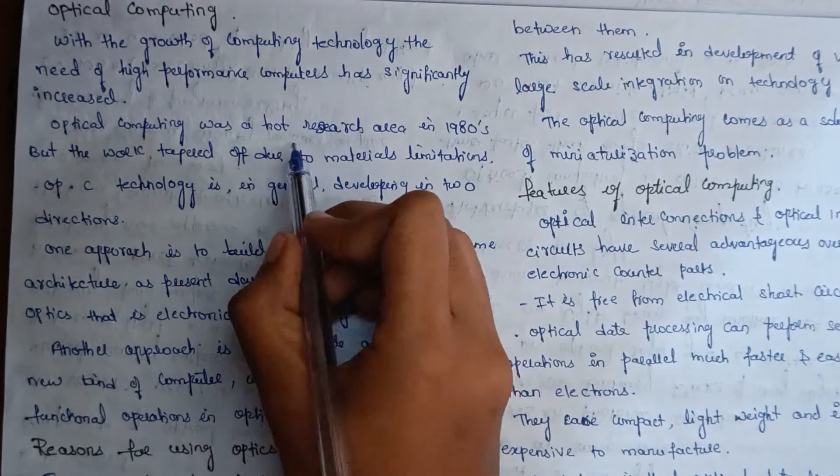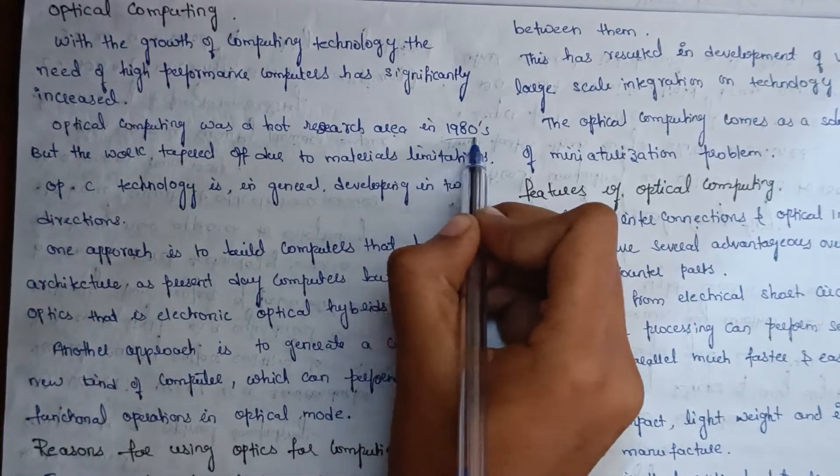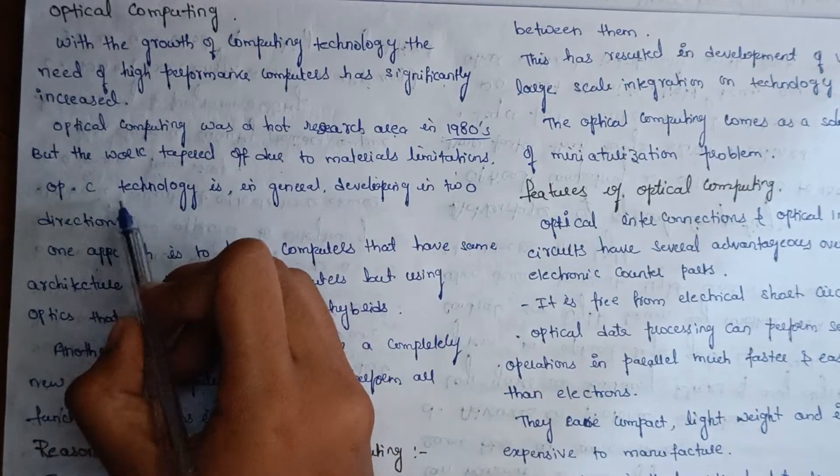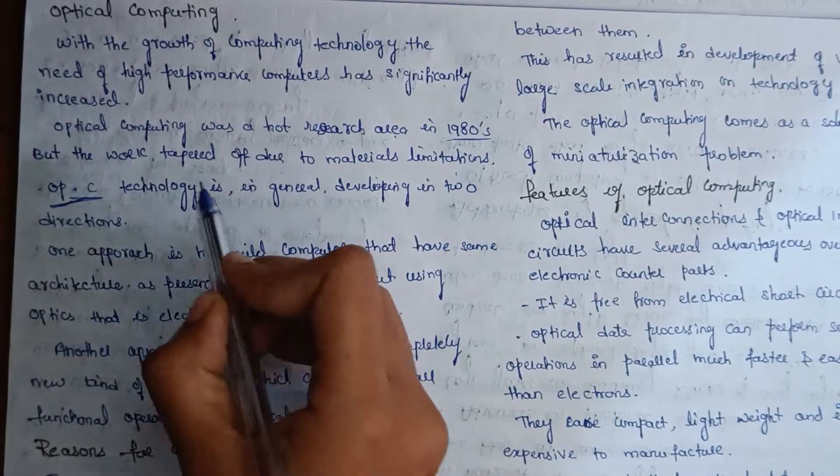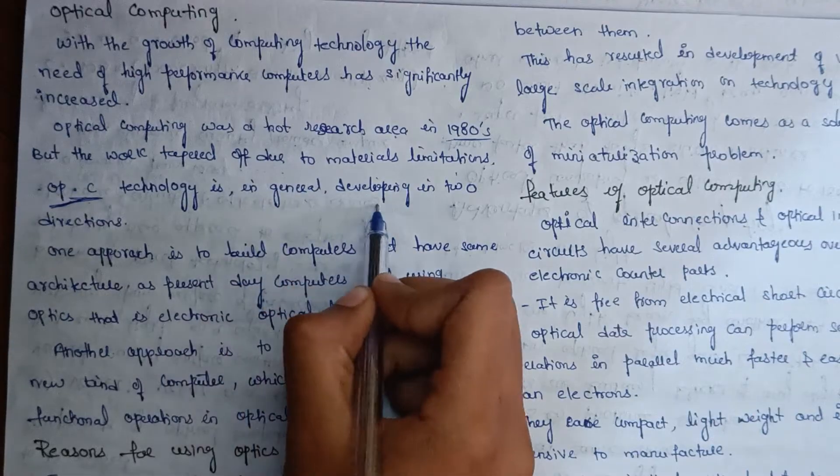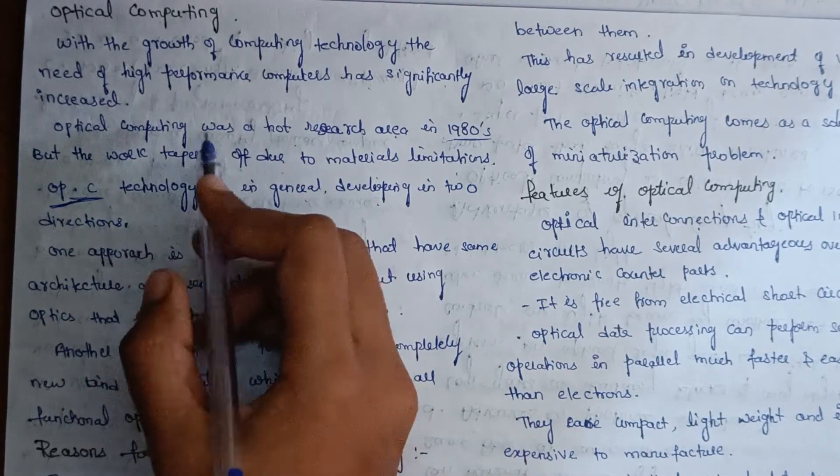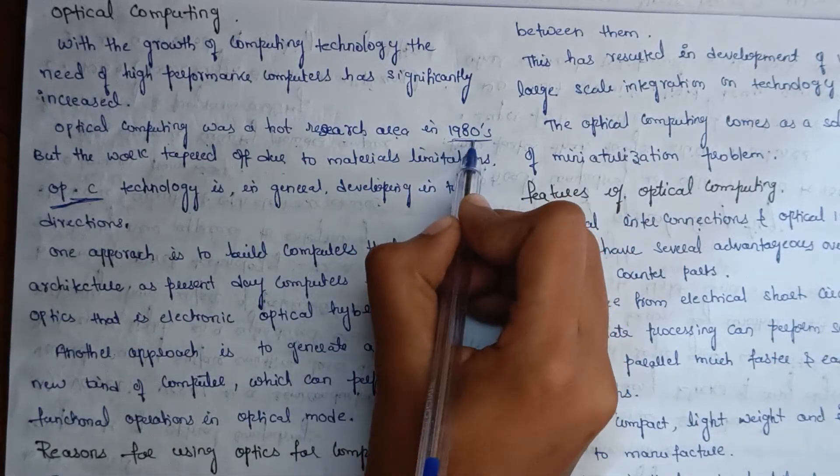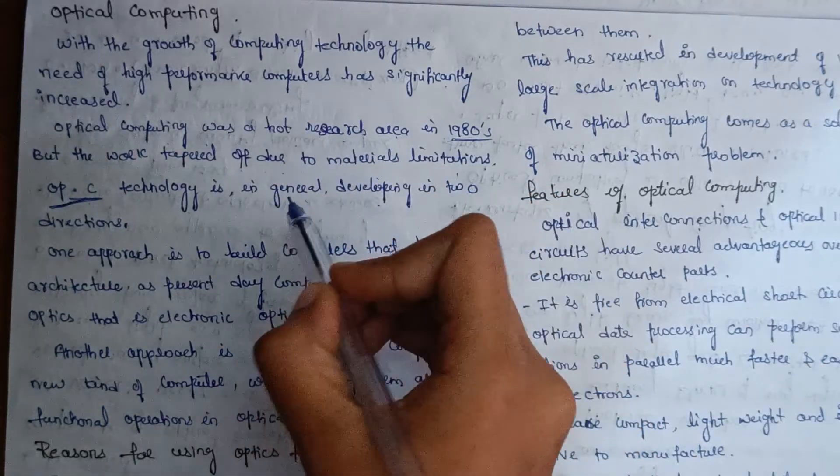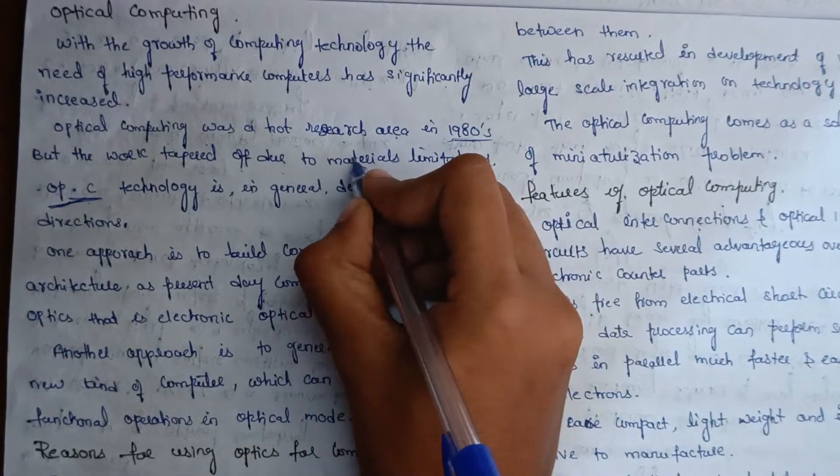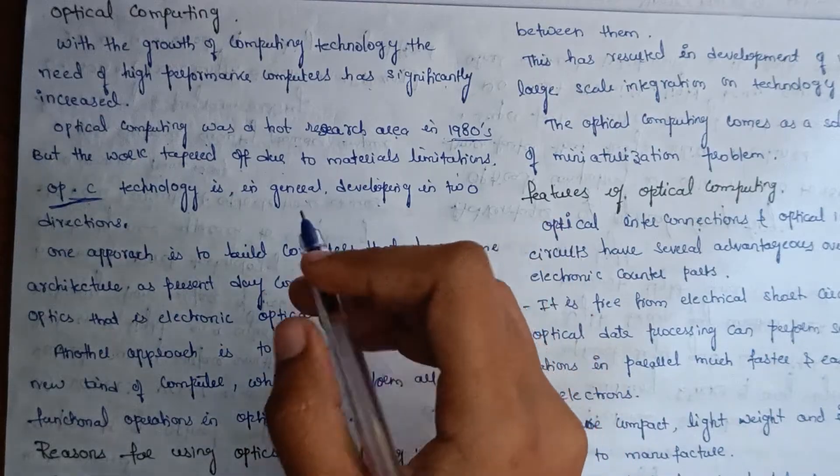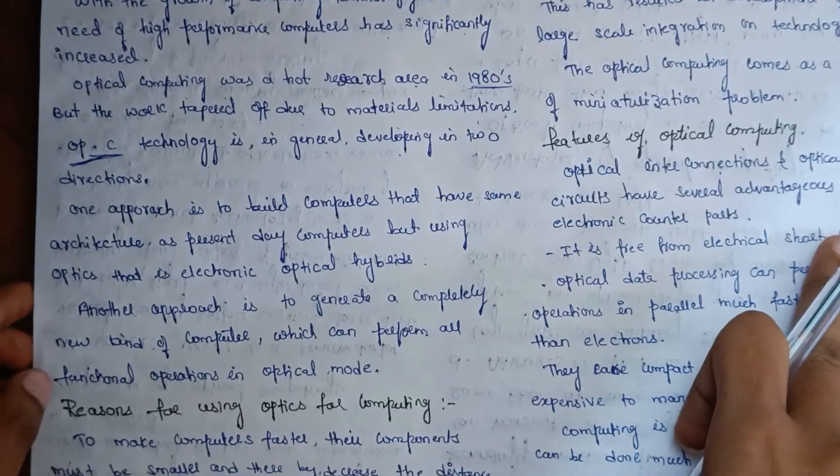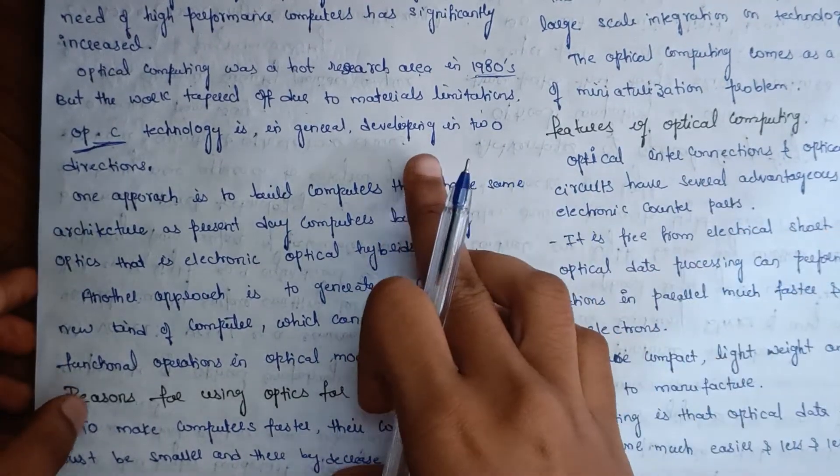Optical computing was a hot research area in 1980s, but the work tapered off due to materials limitations. Optical computing technology is in general developing in two directions.